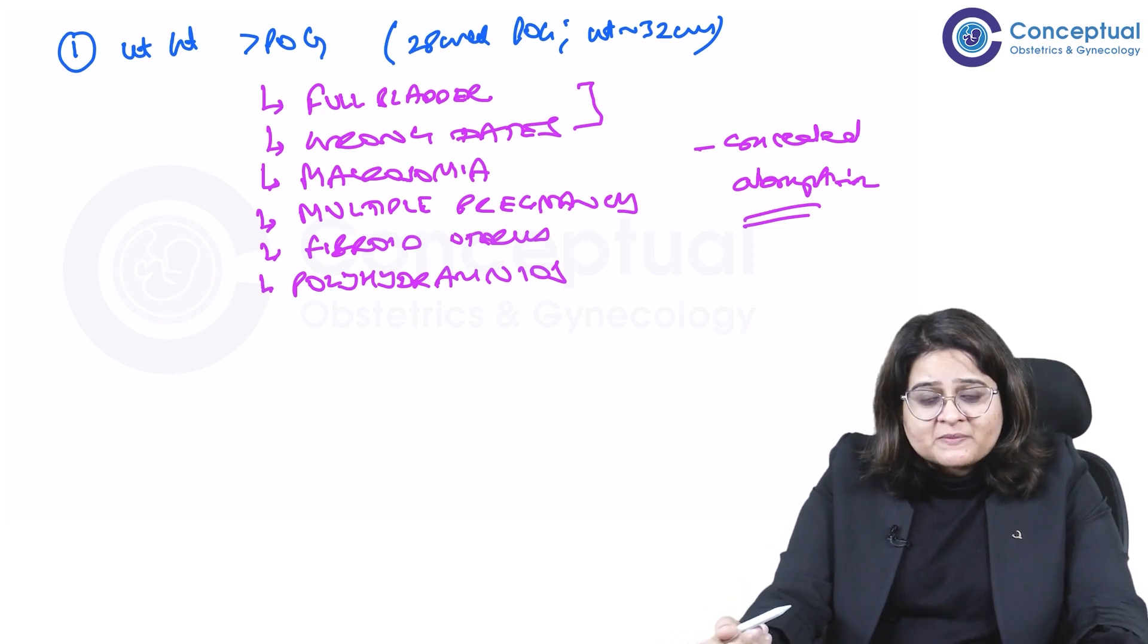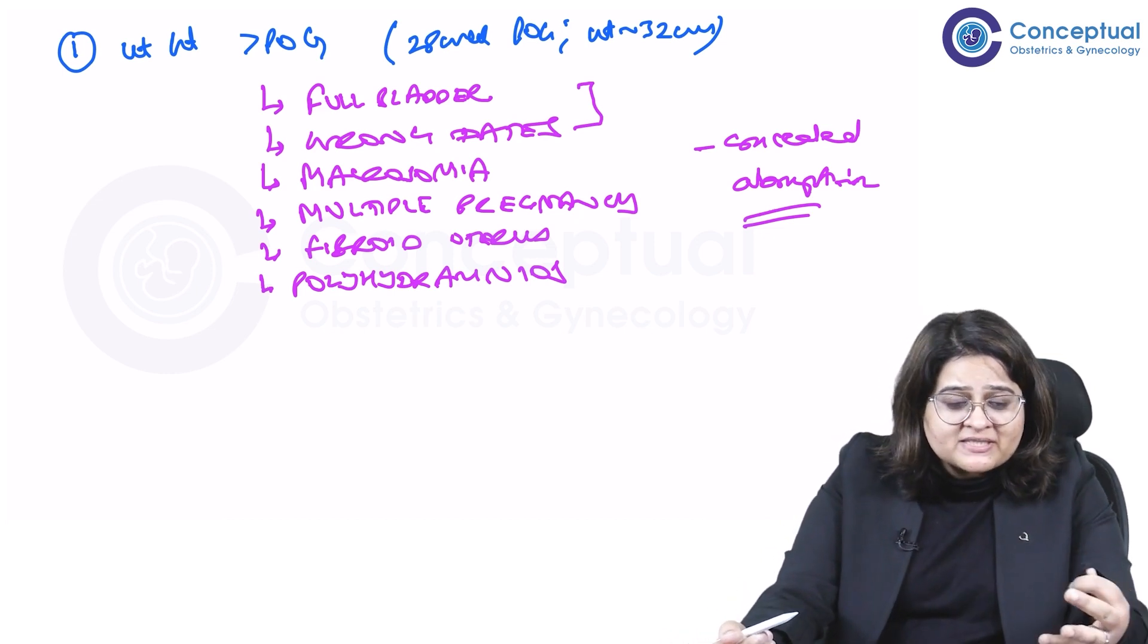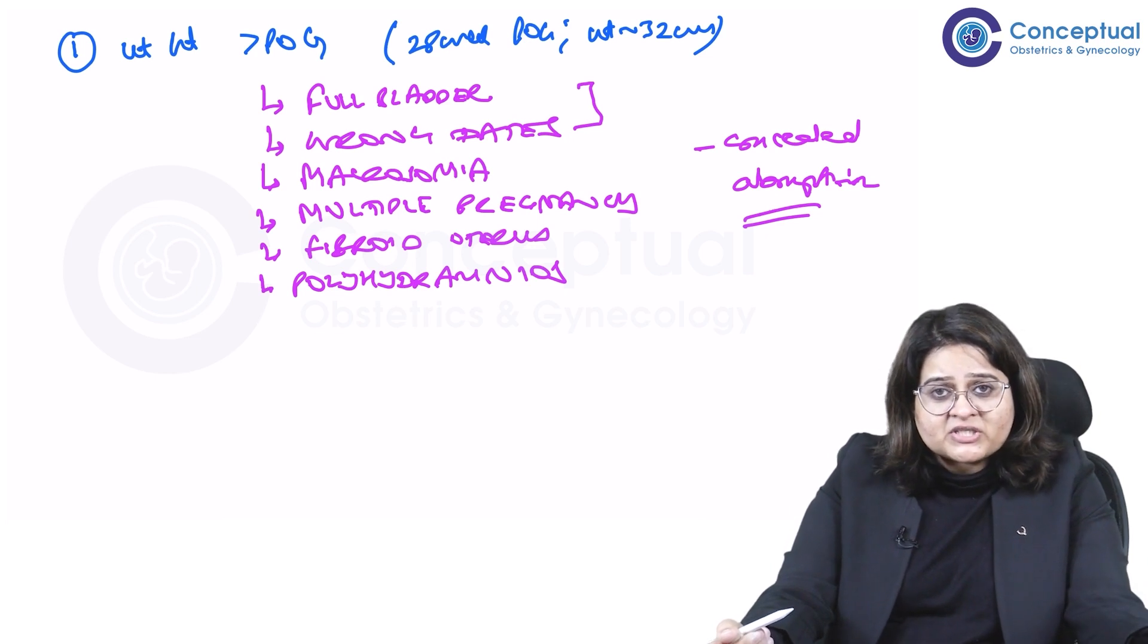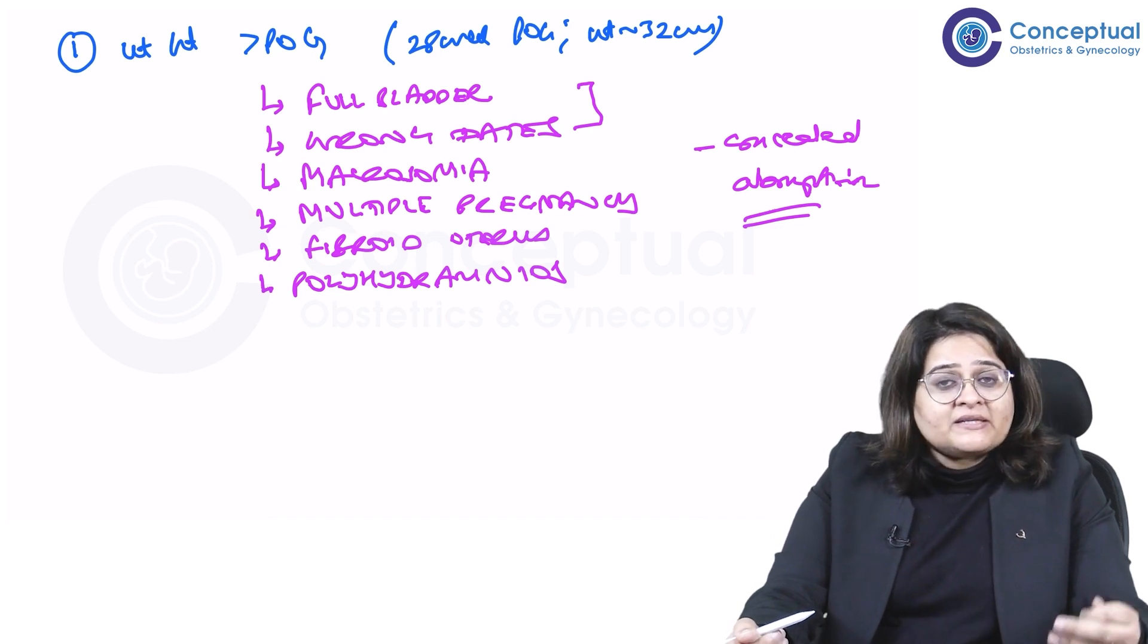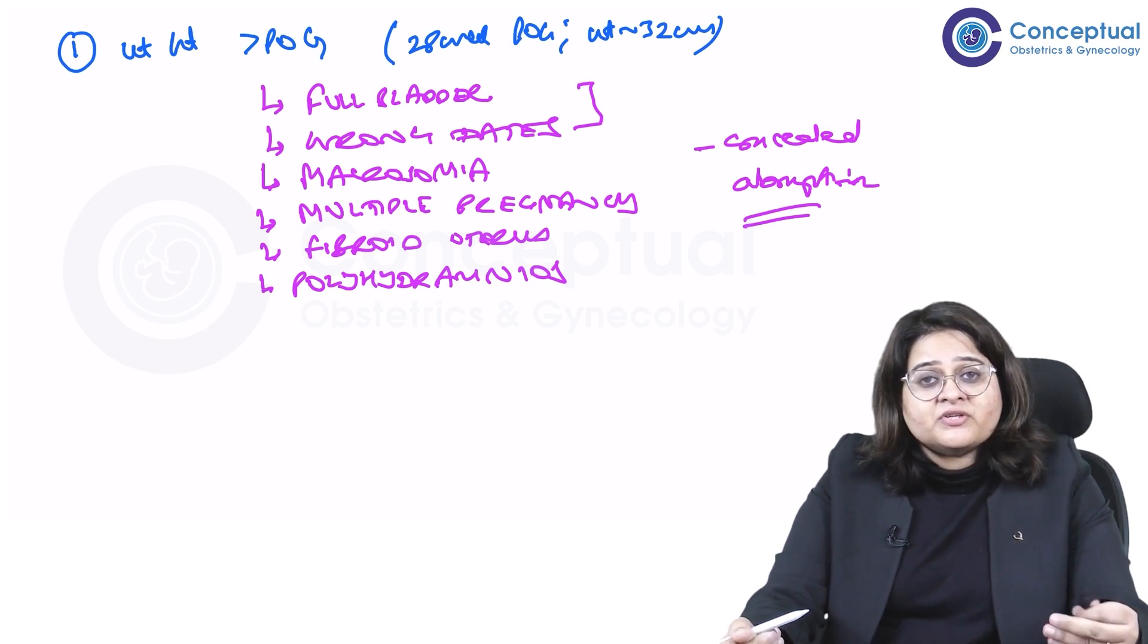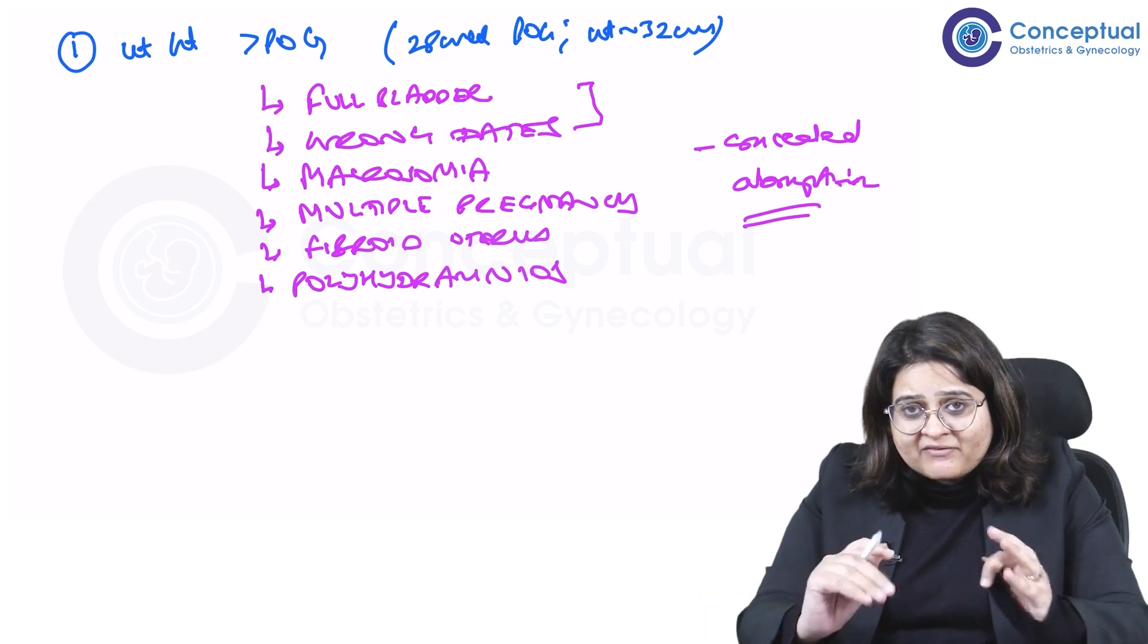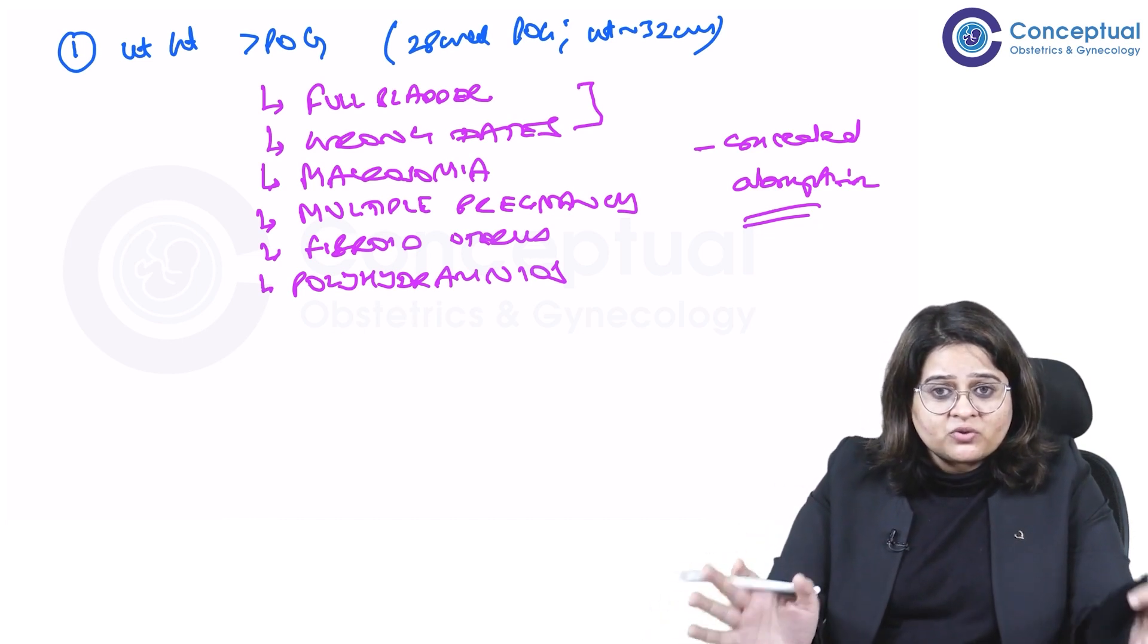Concealed abruption patient though will not silently present to your OPD. She would have more symptoms if it's that much concealed that it's more than the period of gestation. She would definitely be uncomfortable. She would be having pain. She might have bleeding or spotting. She might be hypertensive. So you will have other things in your clinical picture also.